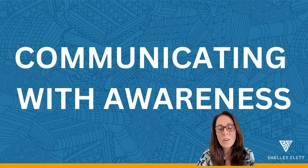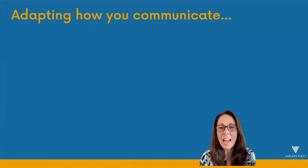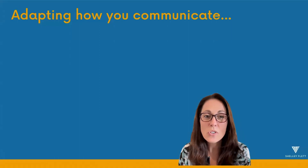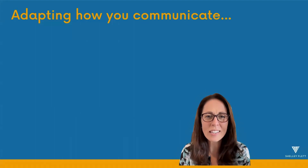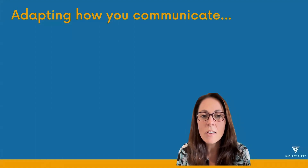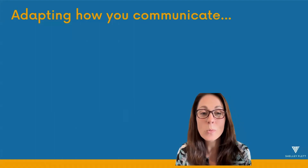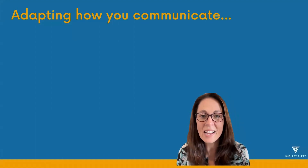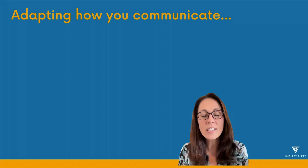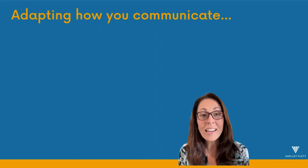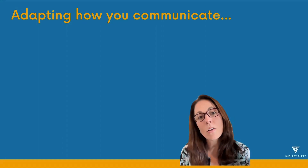Communicating effectively is a really big component of that. I want to share a model with you, and this model is really around adapting how you communicate. It's looking at: do I like to communicate in the big picture — am I okay with headline statements and a small subheading? Or do I need more detailed information — the headline, the sub-headline, the article, the appendices, and any attachments? Different people will want to communicate differently, and when you can understand how you communicate and how the person you're wanting to influence communicates, you can see the gap and adapt your style.